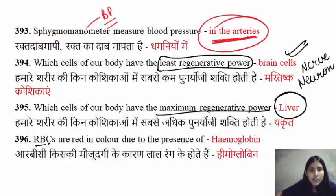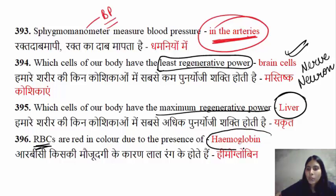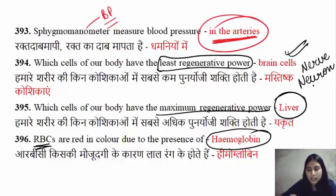Red blood cells are red in color because they contain hemoglobin, which is a red color pigment.